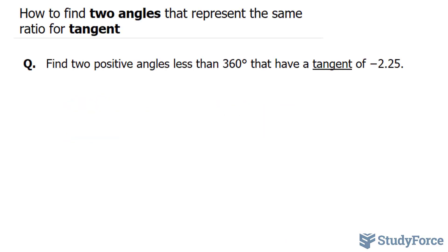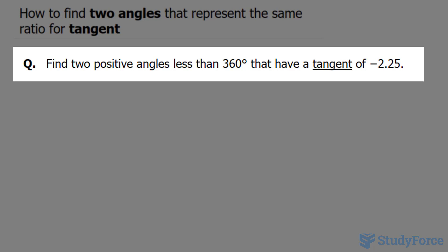In this video, I'll show you how to find two angles that represent the same ratio for tangent. The question reads: find two positive angles less than 360 degrees that have a tangent of negative 2.25.